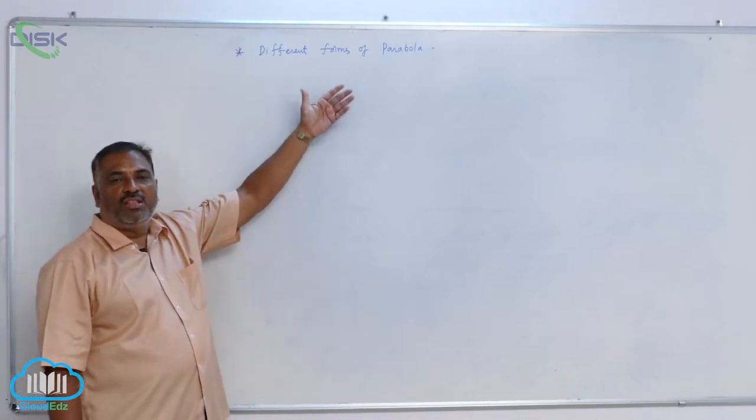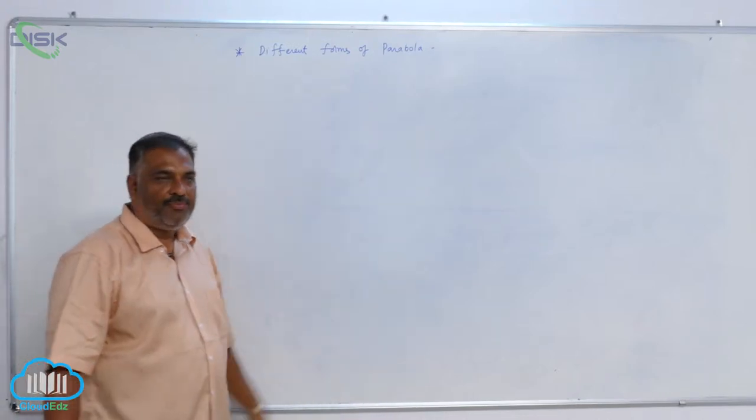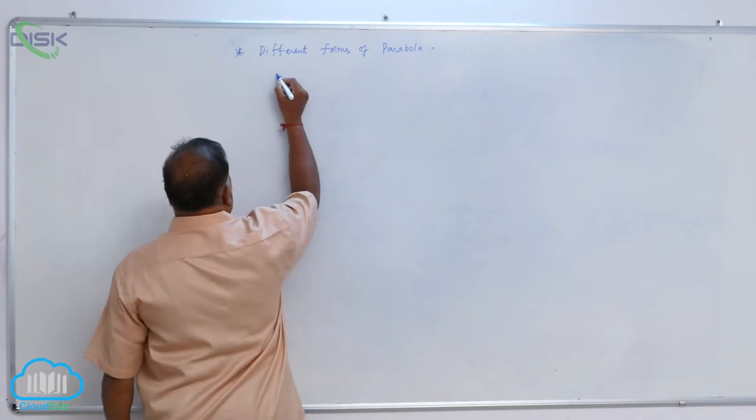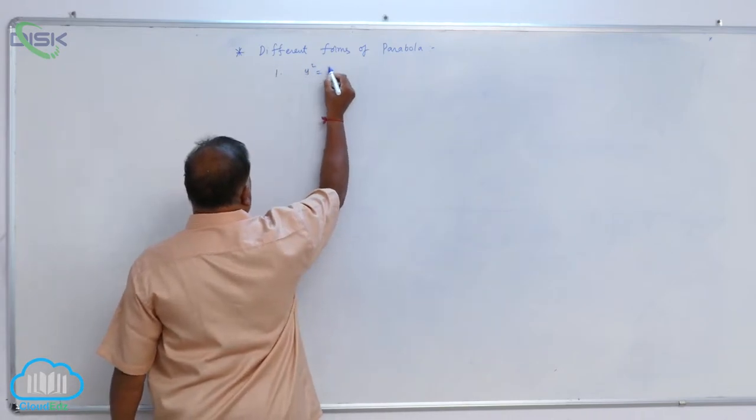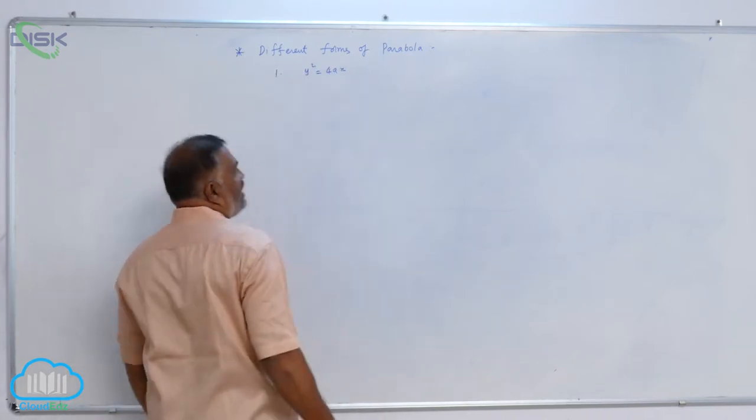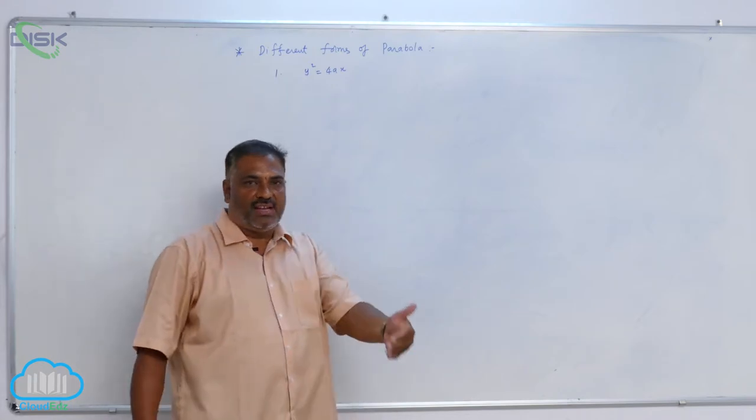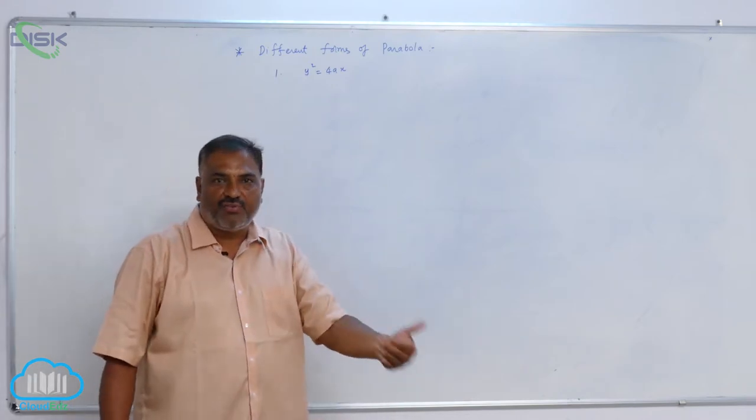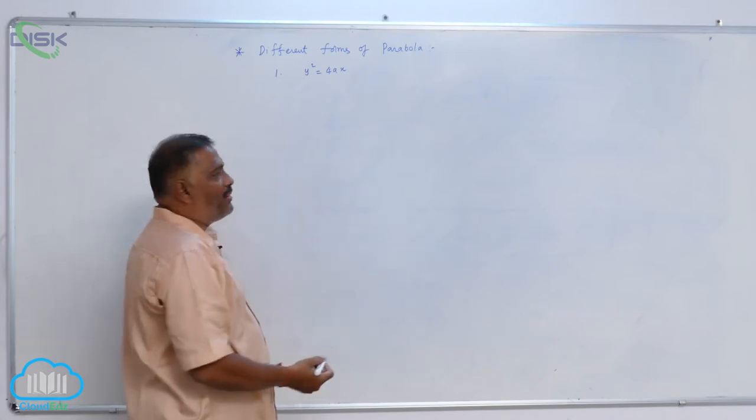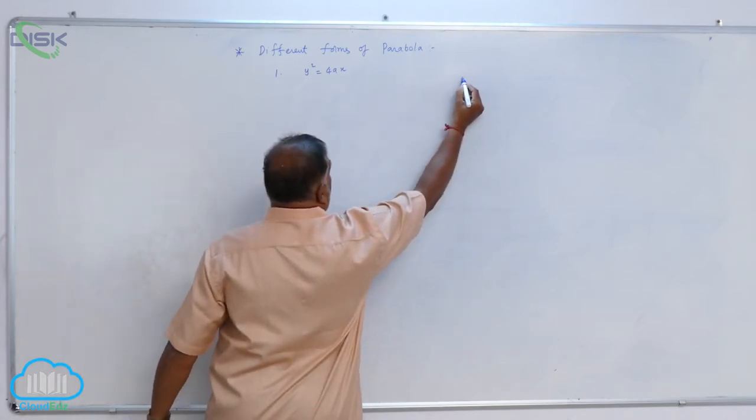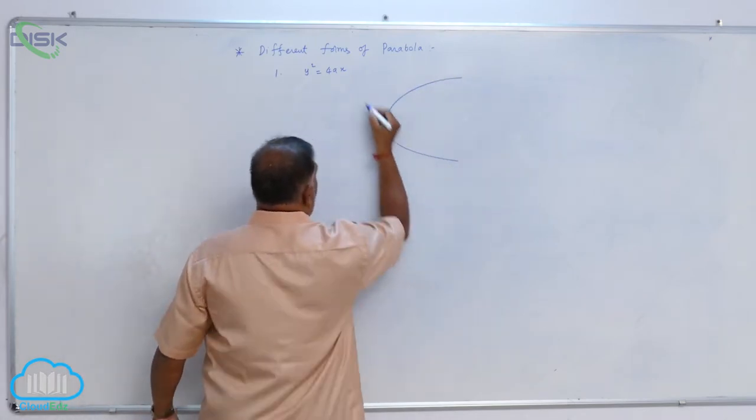Today we will discuss the different forms of parabola. Number one: y square is equal to 4ax. Now you are able to see very clearly, as we discussed earlier, the standard equation of parabola. Let us draw the diagram. This is the parabola standard equation like this.